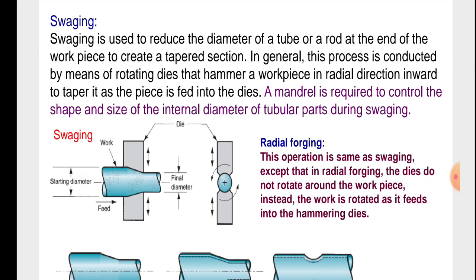Swaging is used to reduce the diameter of a tube or rod at the end of the workpiece to create a tapered section. In general, this process is conducted by means of rotating dies that hammer a workpiece in the radial direction inward. Swaging is used to taper the piece as it is fed into the dies.